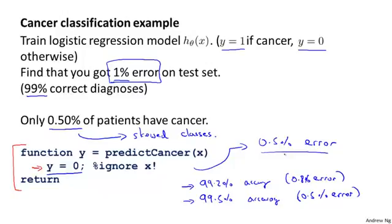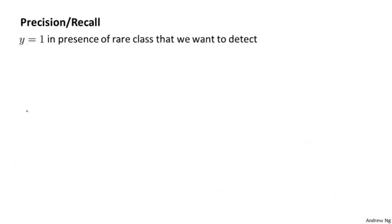Just predicting y equals 0 more often can bring your error down to as low as 0.5%. When faced with skewed classes, we want to come up with a different evaluation metric. One such evaluation metric is what's called precision and recall.